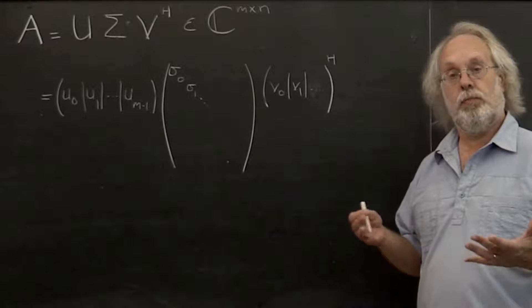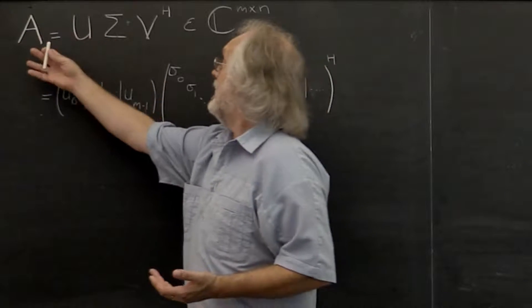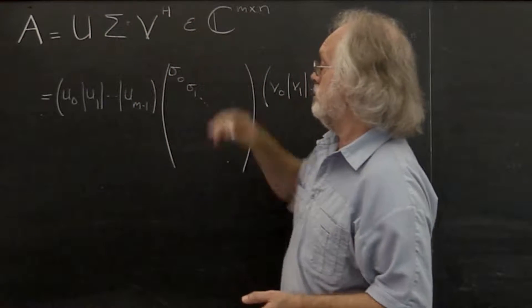So far we've been dealing with matrices in the abstract. A matrix A, that's M by N, can be written as U times sigma times V Hermitian transpose.